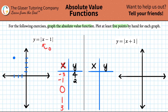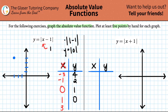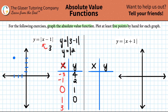Next, we plug in zero: y equals the absolute value of zero minus one, so y equals the absolute value of negative one, which gives us one. Then plugging in one: y equals the absolute value of one minus one, which is the absolute value of zero. Zero is neither positive nor negative, so y equals zero. Finally, plugging in three: y equals the absolute value of three minus one, which is the absolute value of two. Two is already positive, so y equals two.